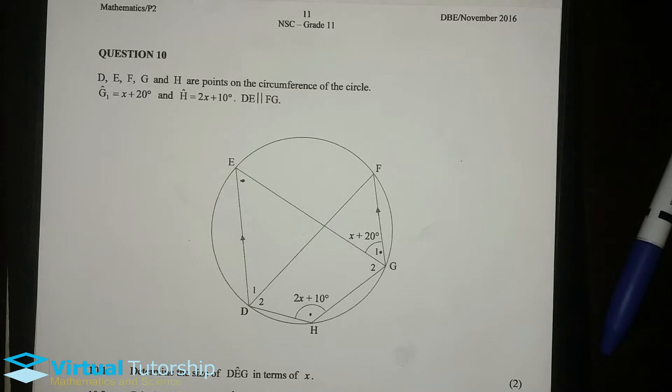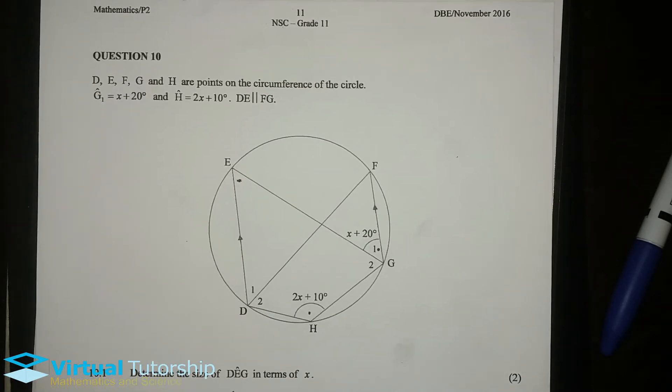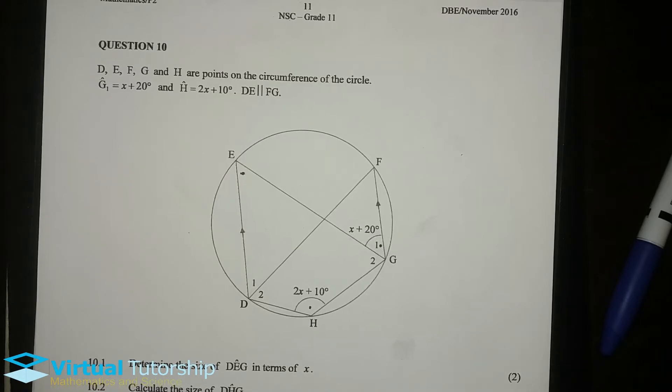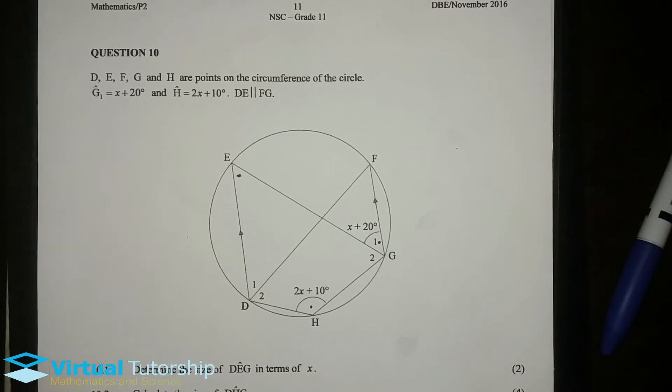D, E, F, G, and H are points on the circumference of the circle. G1 is equal to X plus 20 degrees. H is equal to 2X plus 10 degrees. And then, DE is parallel to FG. DE is parallel to FG.